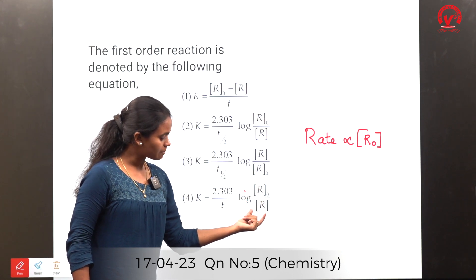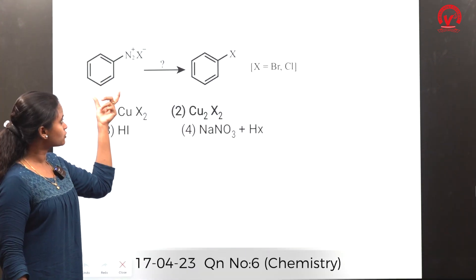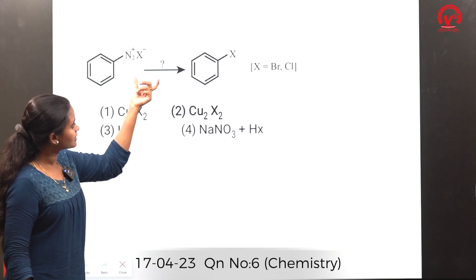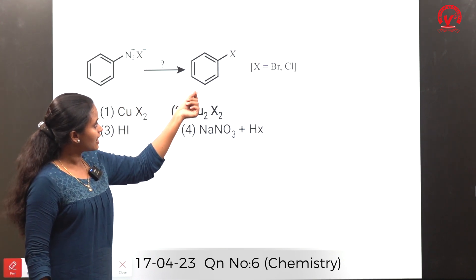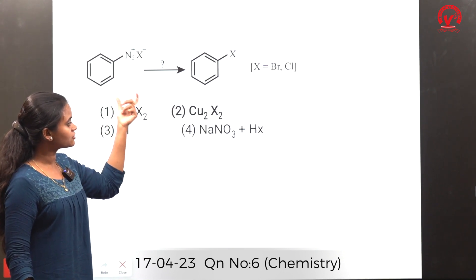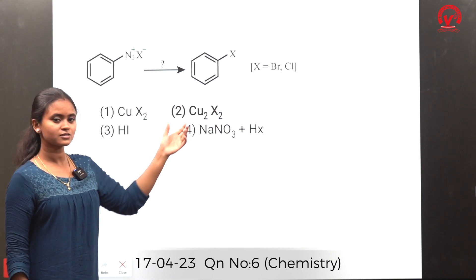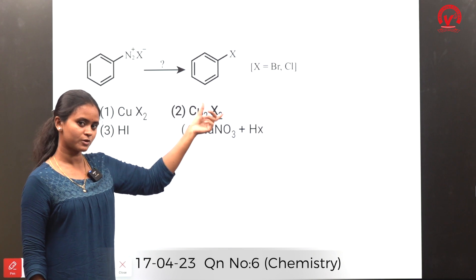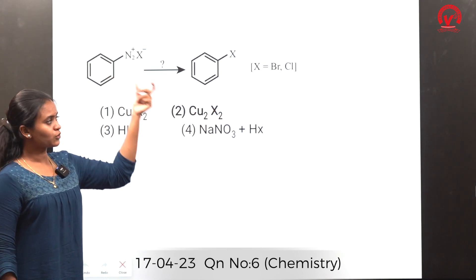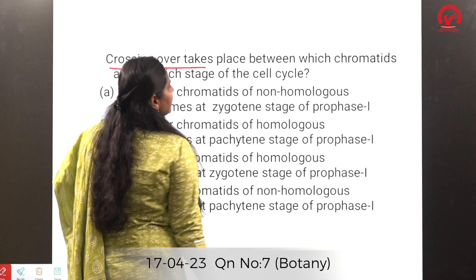In the aromatic diazonium salt reaction with a particular catalyst which gives halobenzene — the catalyst used is cuprous chloride or cuprous bromide. This cuprous chloride or cuprous bromide replaces the diazonium group with halogen groups.